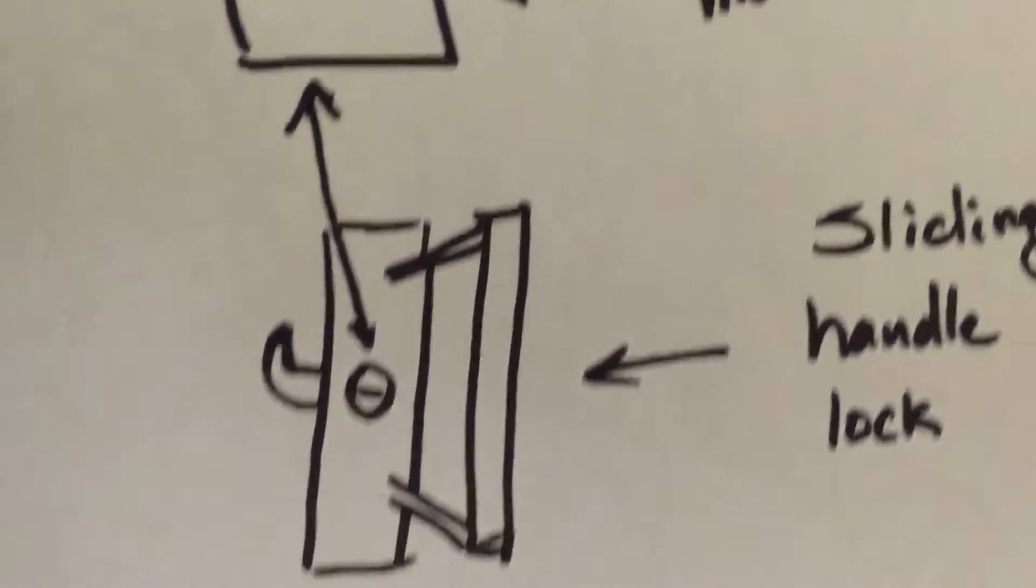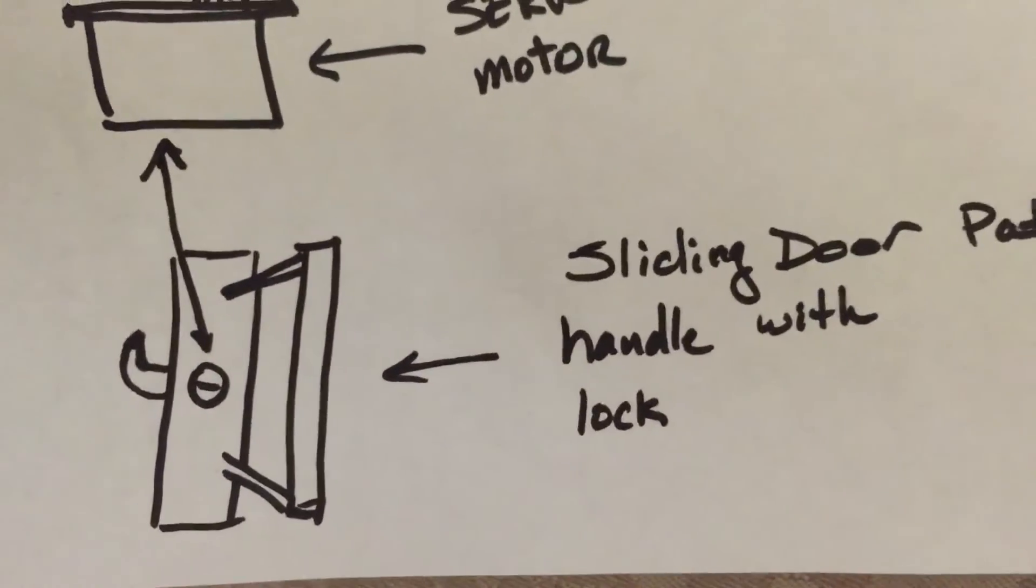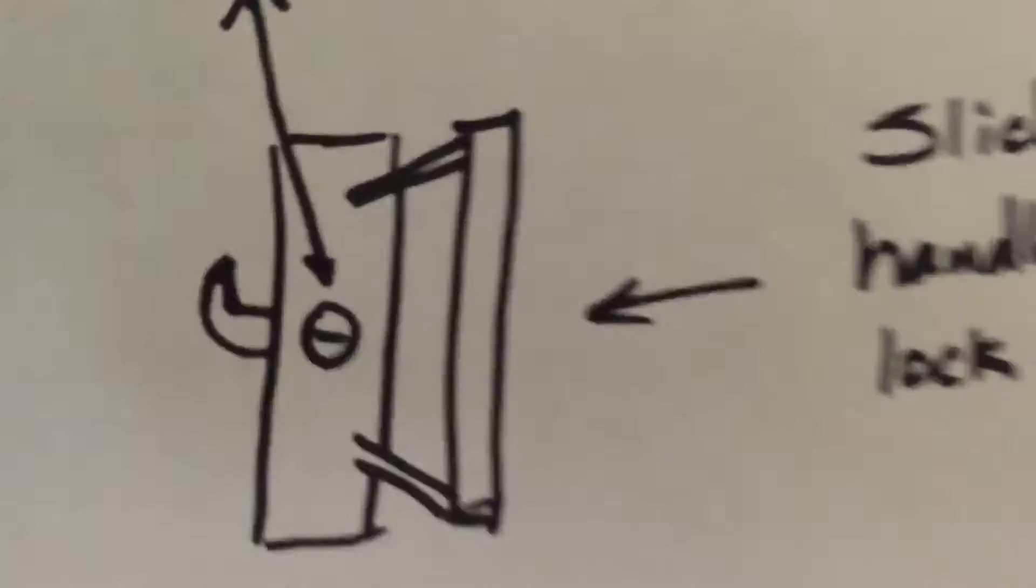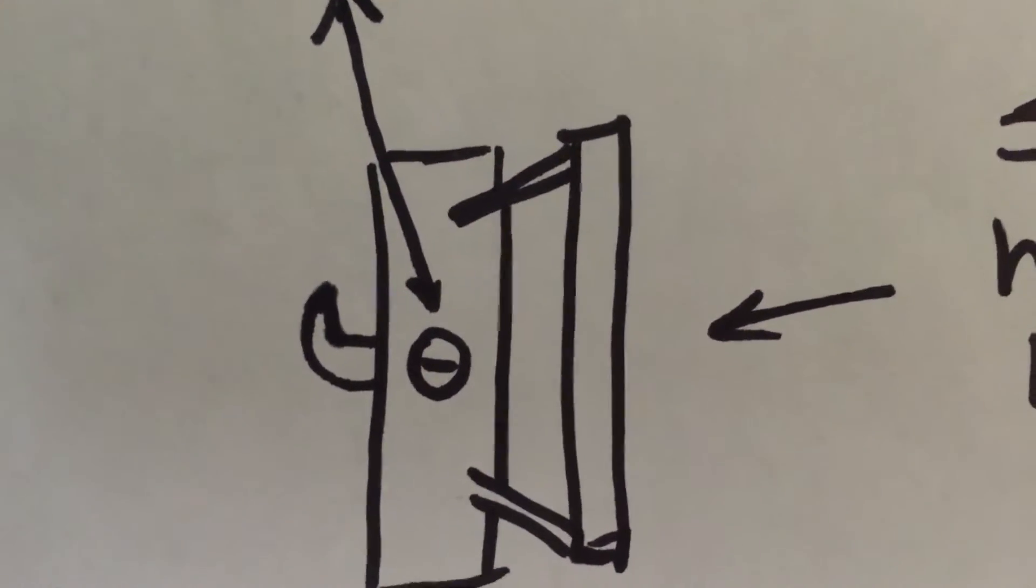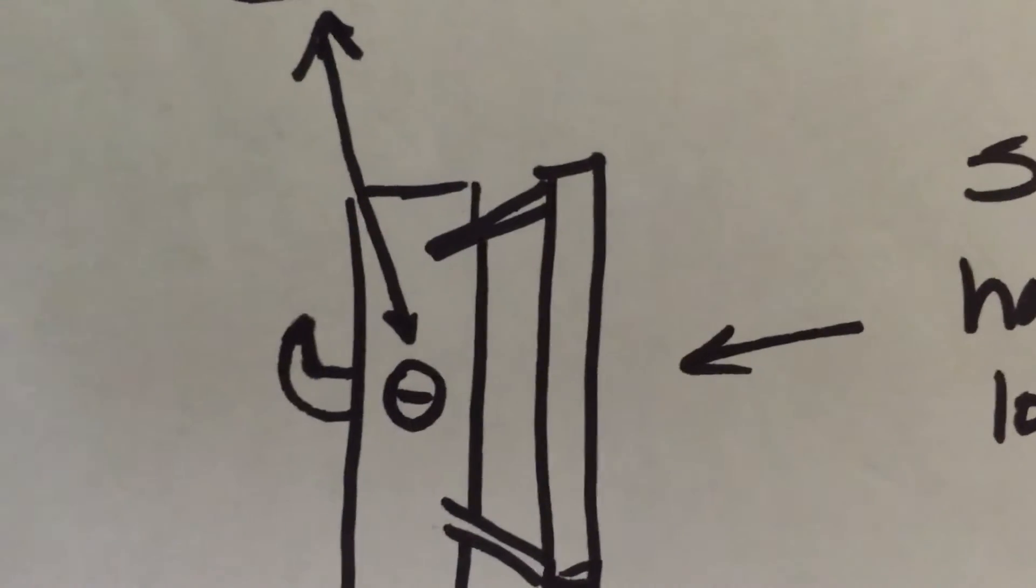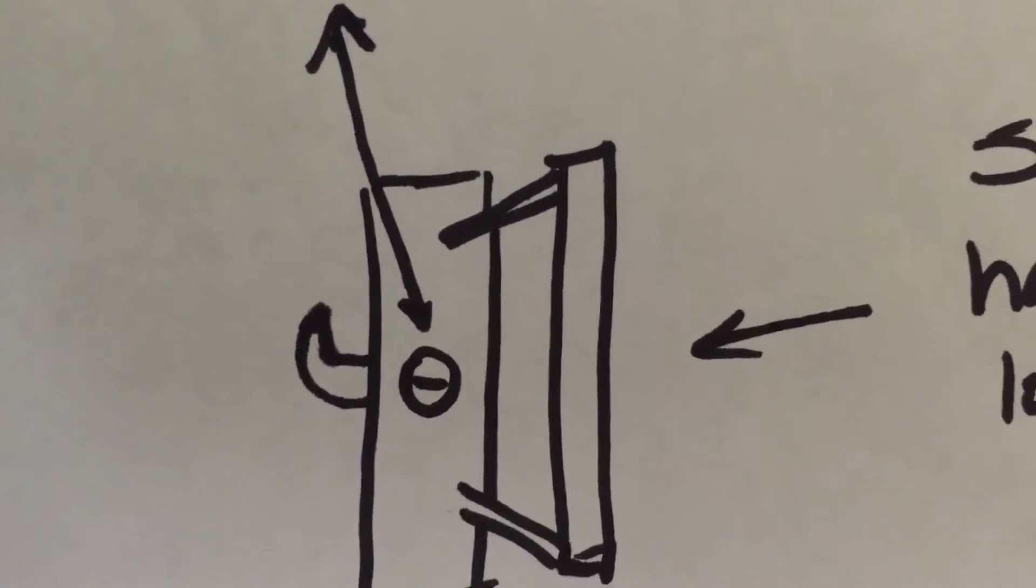The servo motor is going to be directly connected to the sliding door patio handle with the lock. You can see right here, a little circle with a line in it. That's pretty much where it's going to be actually connected to.